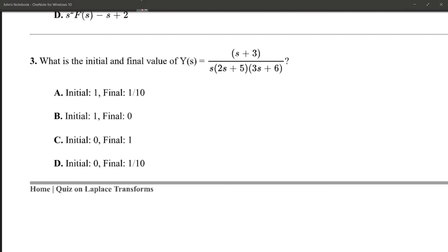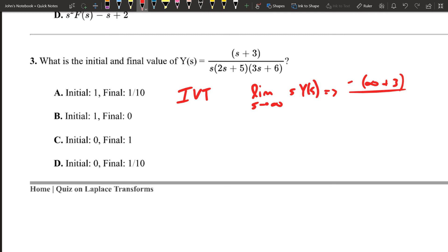Let's go ahead and do the first one. I'm going to make this just a little bit smaller so we can see it. Let's do the initial value theorem first. That's going to be the limit as s goes to infinity of s times y of s. That is going to be, let's go ahead and put that at infinity. So I'll have infinity plus 3 divided by, and then I have s and s here, and these are going to cancel. And then I'm going to have infinity plus 5, and then infinity plus 6. This is going to go to 0. That's going to be the limit. And so the initial value is going to be 0. So I know it's one of these here.